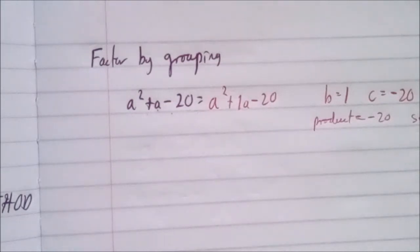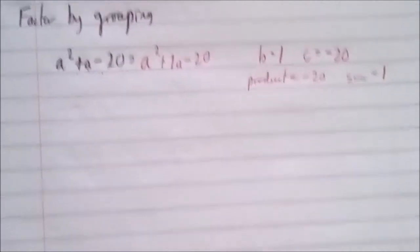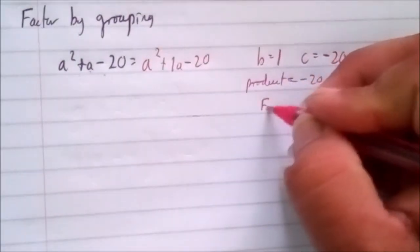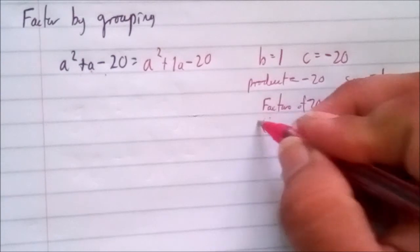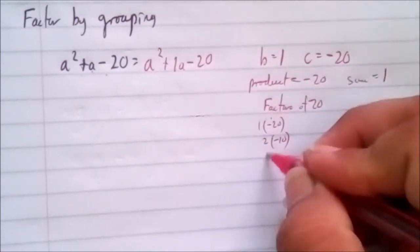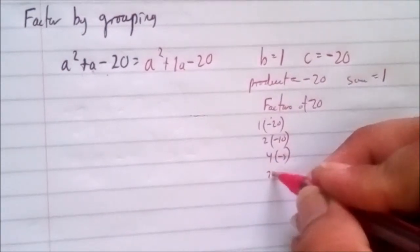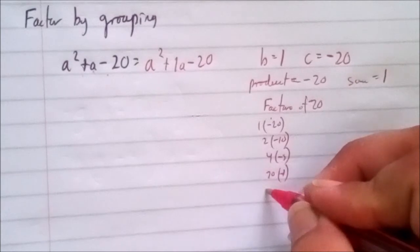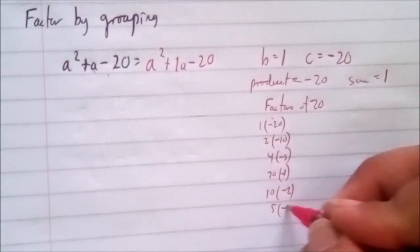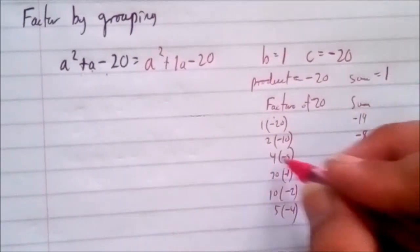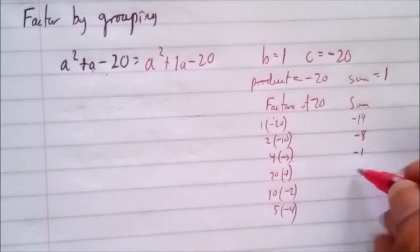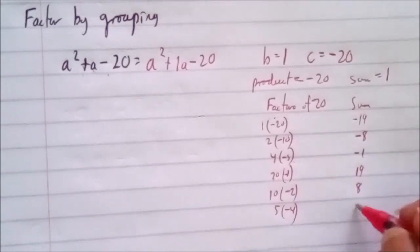Since the integers must have a negative product, their signs must be different. The factors of negative 20 are: 1 times negative 20 (sum: negative 19), 2 times negative 10 (sum: negative 8), 4 times negative 5 (sum: negative 1), 20 times negative 1 (sum: 19), 10 times negative 2 (sum: 8), and 5 times negative 4 (sum: 1).